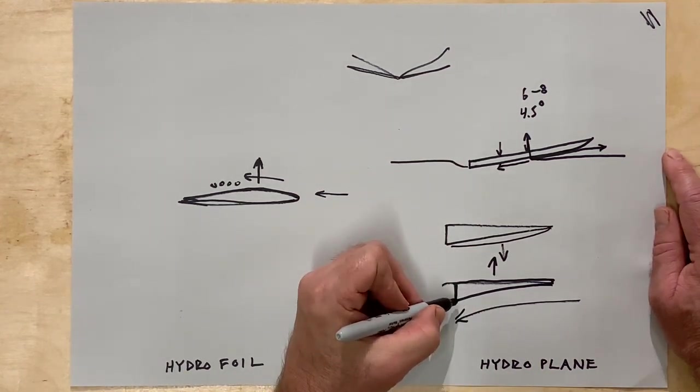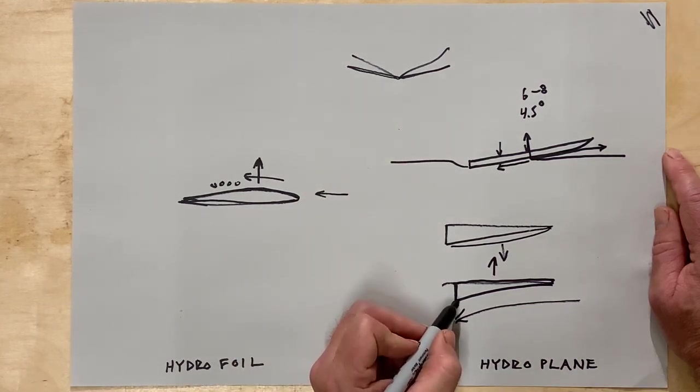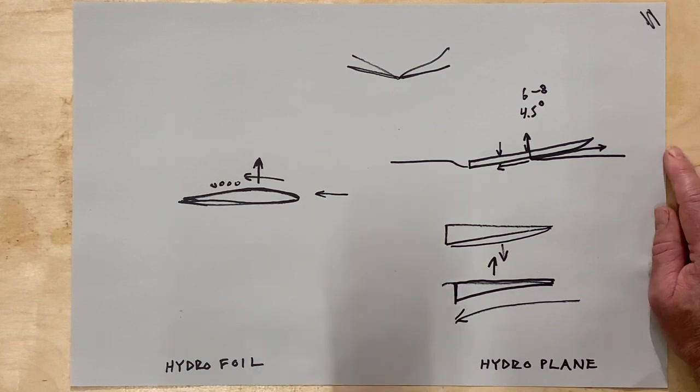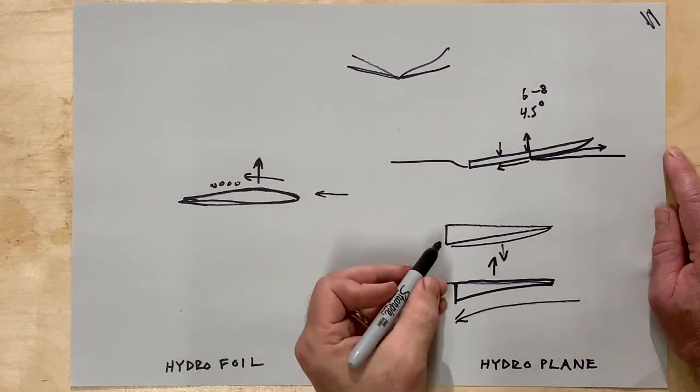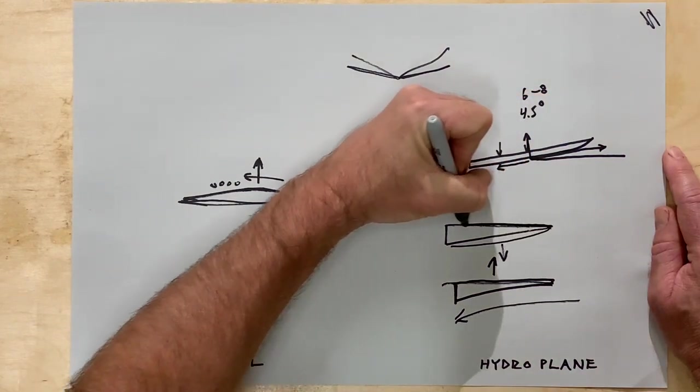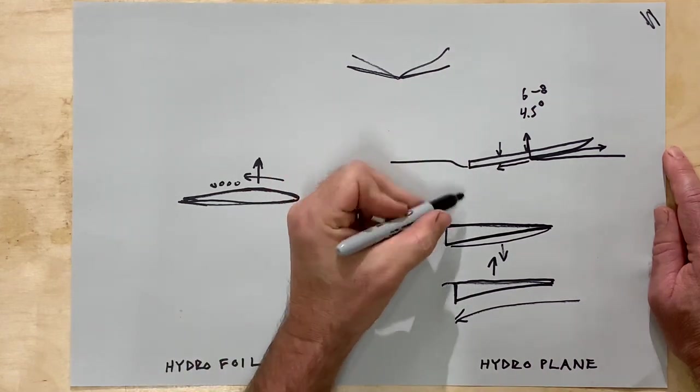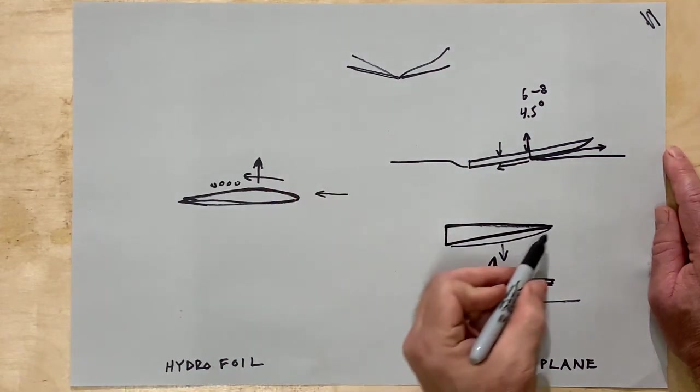So for like a hydroplaning surface to lift a boat, it's better just to have basically a wedge shape.